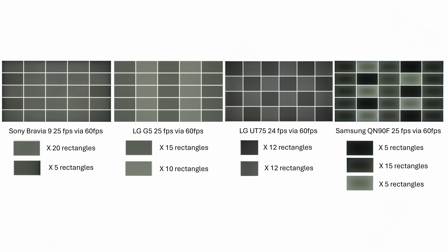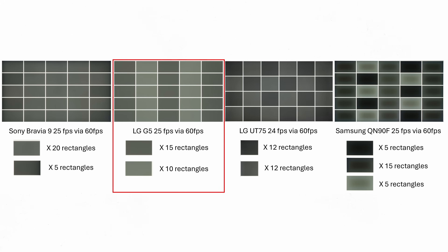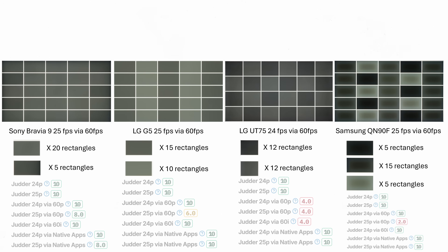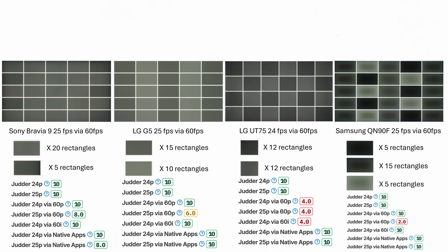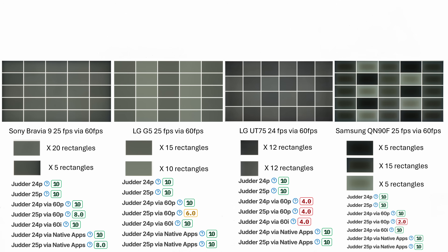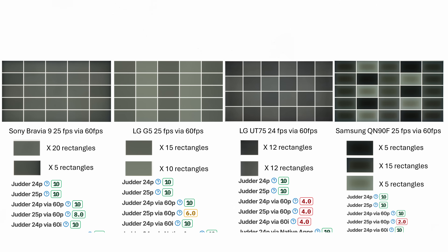Looking at 25p content, the results get more interesting. None of our 10 TVs can de-judder 25p content via 60fps properly, but some do a better job than others, meaning judder will appear better or worse depending on the TV. The Samsung QN90F is the worst offender so far, with three different shades of grey indicating greater inconsistency in frame duration. The LG G5 is a lot more uniform, even if it's not fully de-juddered. For that reason, we now assign a score to every TV's judder performance. A perfect 10 is given if the TV can de-judder a signal without issue; otherwise the score is determined subjectively based on the number of equal rectangles, the number of different shades of grey, and the perceptual impact on real content.